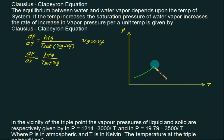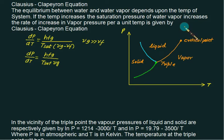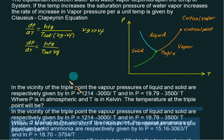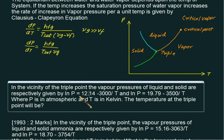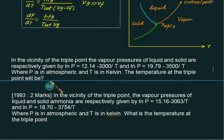We have a pressure versus temperature diagram with a triple point and a critical point. On one side we have solid, then liquid, and on the other side vapor; above the critical point we have supercritical vapor. The dp/dt curve is negative in certain regions, and we can write equations for the saturated liquid and saturated vapor lines, particularly in the vicinity of the triple point.